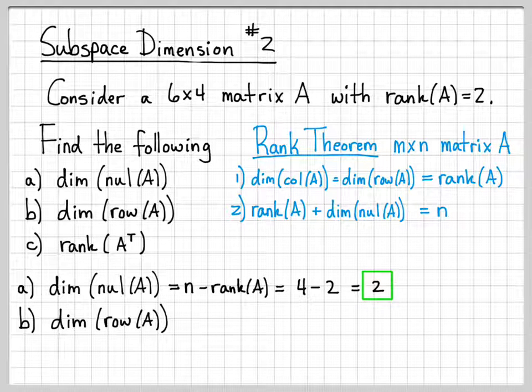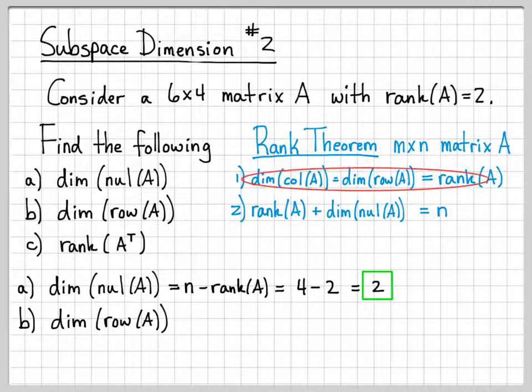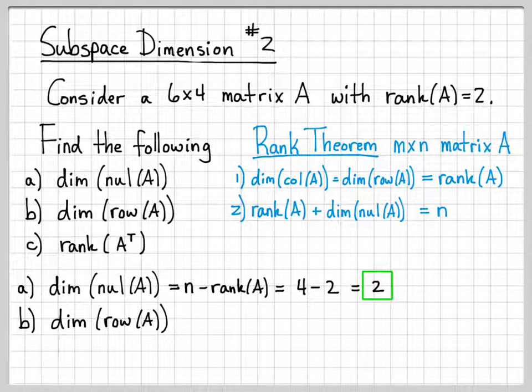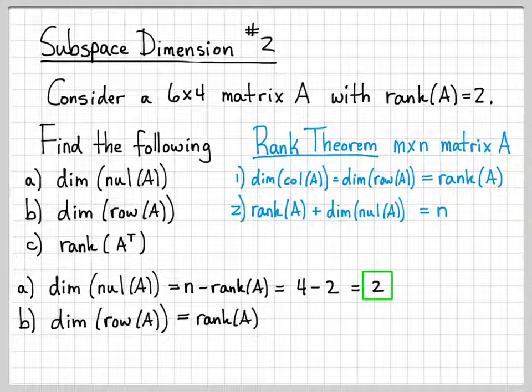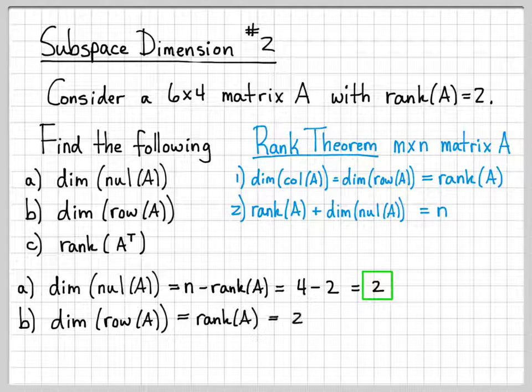Part B: The dimension of the row space. Well, this is pretty easy. Part 1 of the rank theorem tells us that the dimension of column space and row spaces have to be the same, and they have to be equal to the rank of A. Well, we were told the rank of A is equal to 2. So that means the dimension of our row subspace has to be equal to 2.